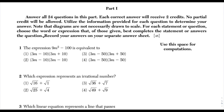First up we have the expression 9m squared minus 100 is equivalent to one of these. We're going to use the difference of two squares formula. Anytime you have something like a squared minus b squared, this factors nicely to a plus b times a minus b. We use this here because we have two perfect square terms and there's a subtraction sign between them.